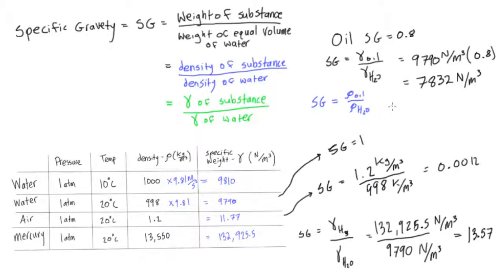Let's say density oil is going to equal, well, 0.8 times 998. And our density of this oil that has a specific gravity of 0.8 is going to equal 798.4 kilograms per cubic meter. And you'll find if you multiply this by 9.81, you will get its specific weight, which is 7832 newtons per cubic meter.